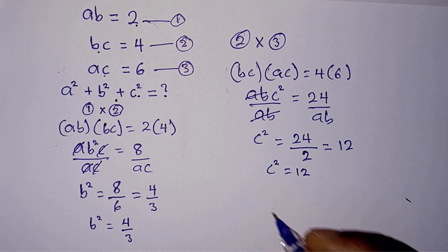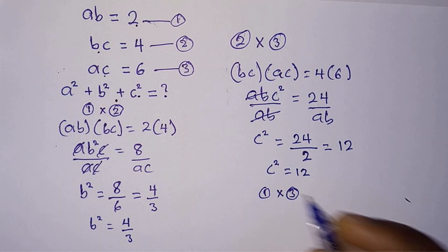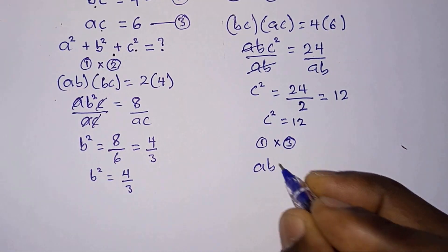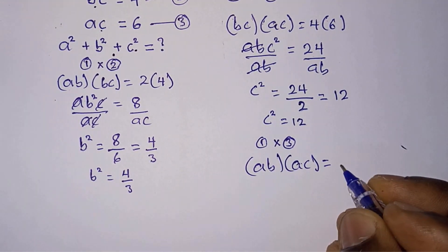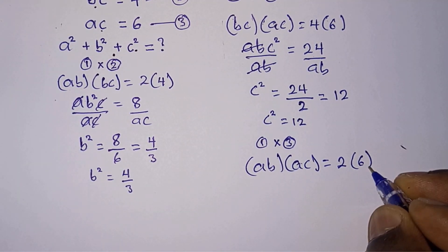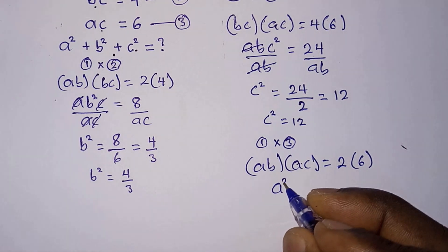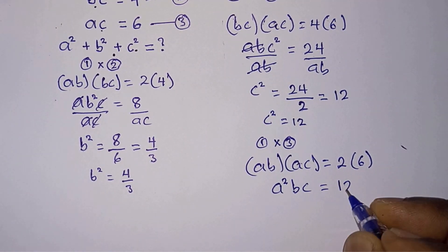Therefore c² = 12. Then lastly we will multiply equation 1 by equation 3. ab times ac = 2 times 6. So we have a²bc = 12.